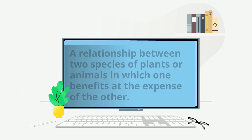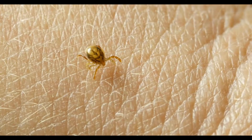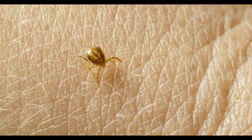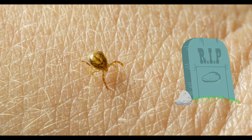Parasitism is a relationship between two species of plants or animals in which one benefits at the expense of the other. Many times the parasites live in or on the host and may even cause the host to die.